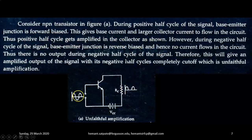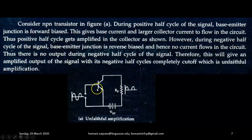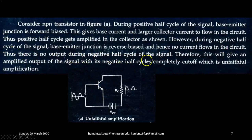However, during the negative half cycle of the signal, the base-emitter junction is reverse biased and hence no current flows in the circuit. Thus, there is no output during the negative half cycle of the signal.